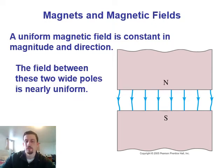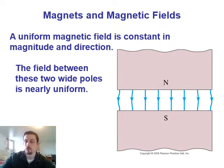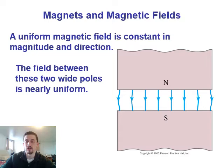A uniform magnetic field just means it's constant in magnitude and direction — similar concept to when we were looking at uniform electric fields. We have this field between two wide poles, and it's nearly uniform. In the whole middle section, it's pretty much a perfectly straight line with the same strength all the way through the center; only at the edges is it very slightly off from uniform. Uniform fields are very useful generally because you know you have the same field everywhere, which makes the math a lot easier, so we're going to spend a lot of time doing problems that use uniform magnetic fields.